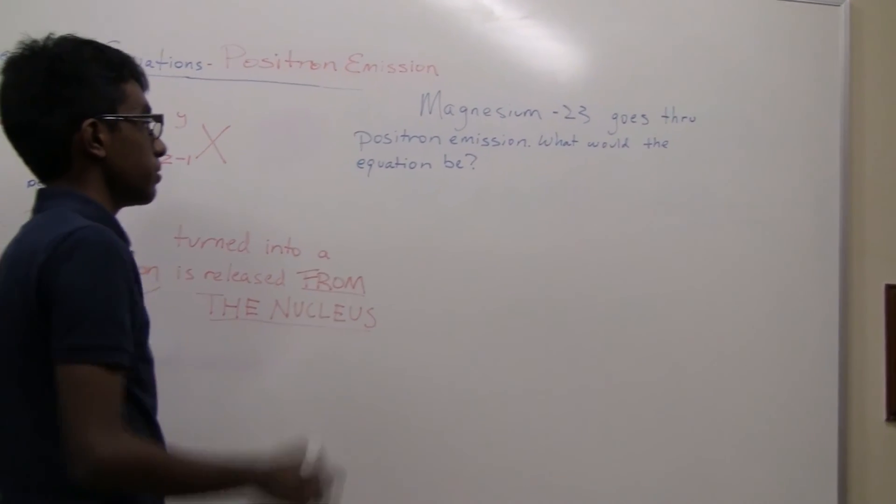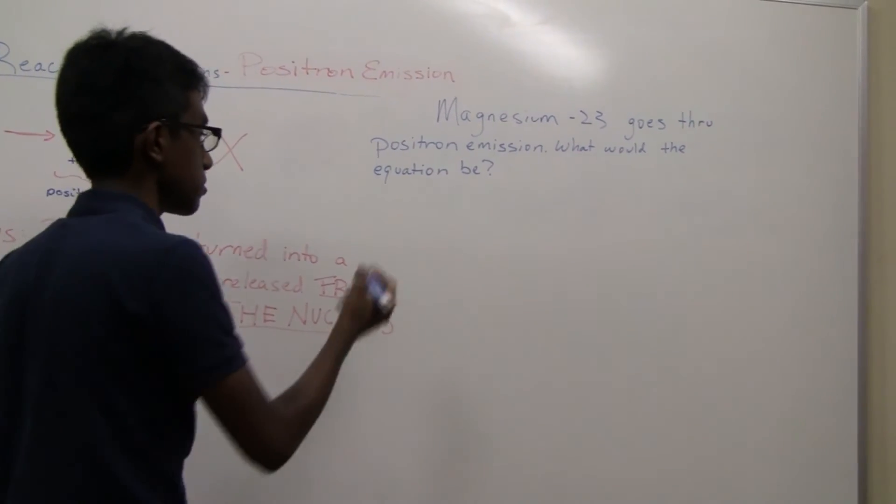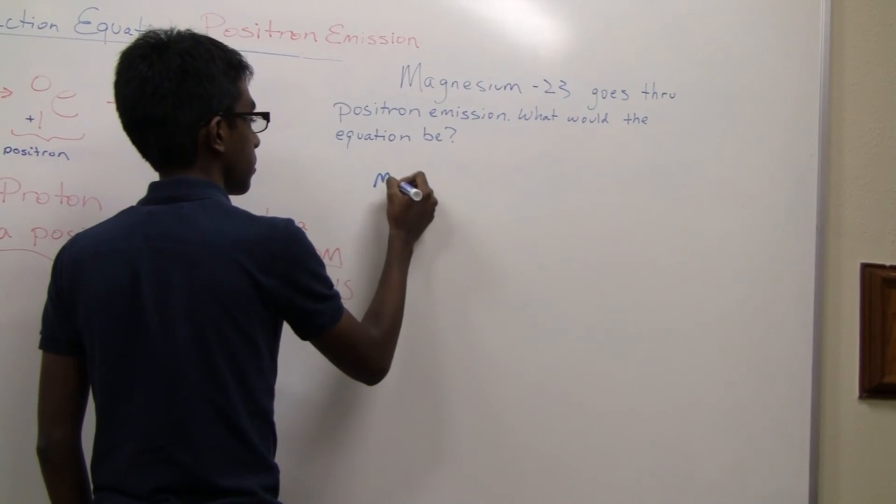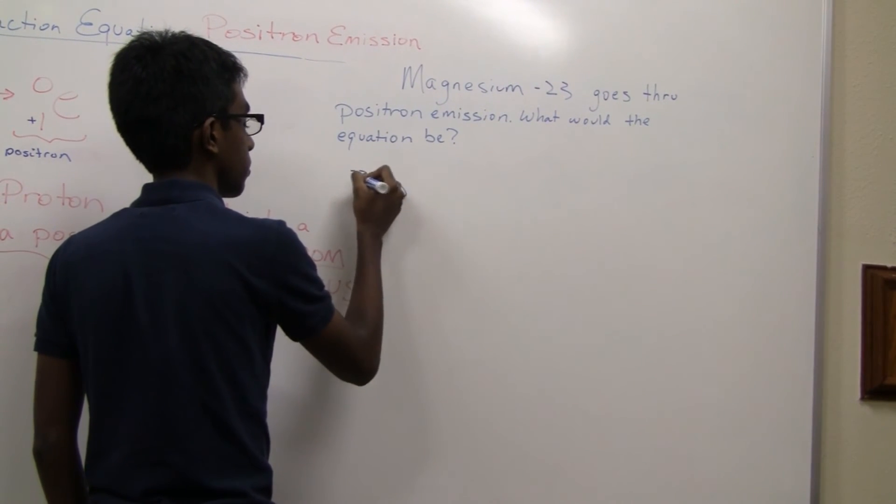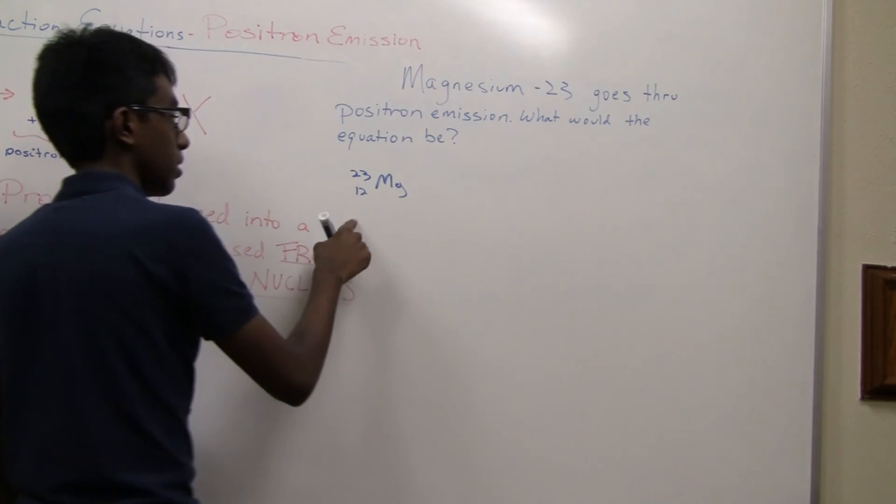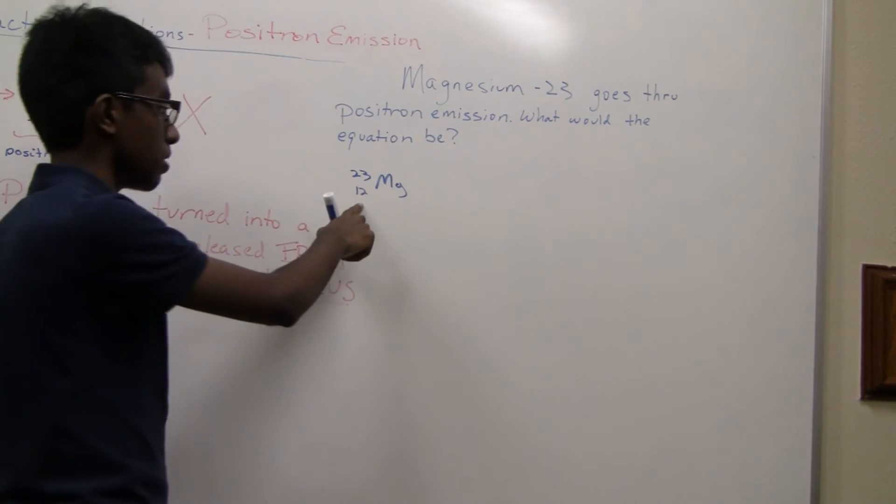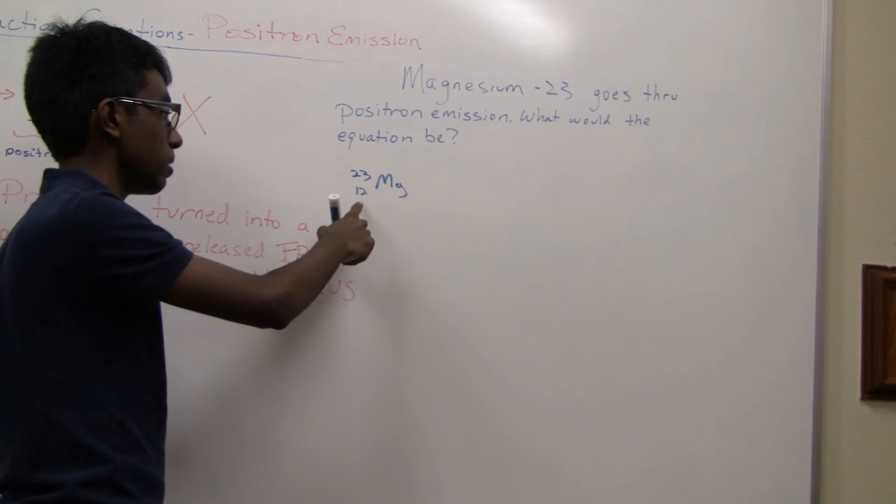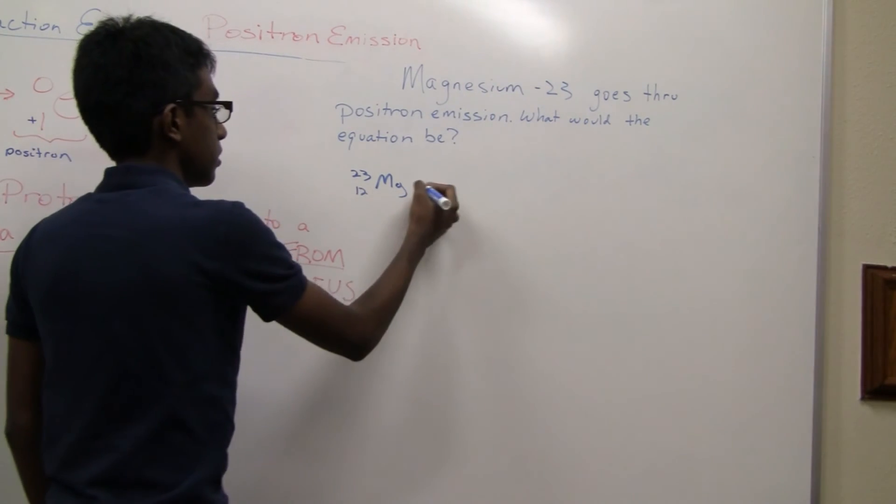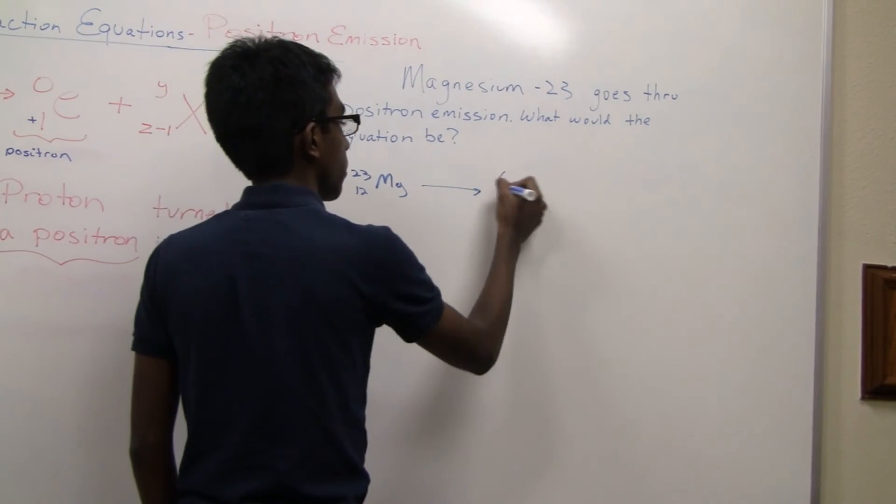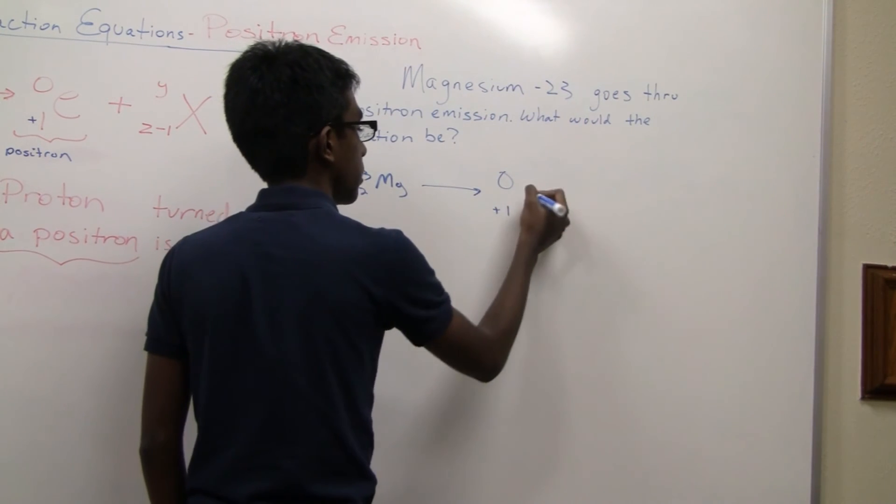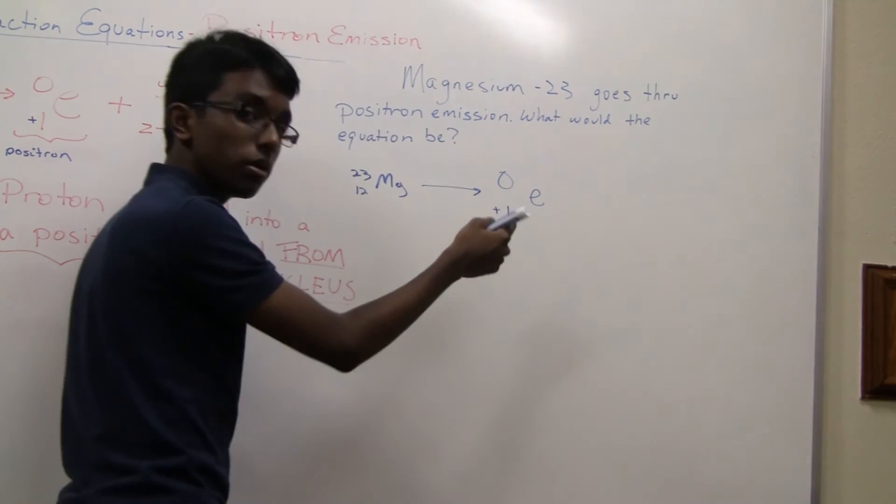So magnesium-23 is going through positron emission. So let's go ahead and write our original atom. 23 is the mass number. 12 is the atomic number because magnesium has an atomic number of 12.